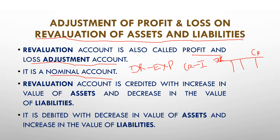On the debit side jitne bhi assets and liabilities se loss hoga, all these losses are shown on the debit side. And jitne bhi benefit honge, income hogi with the revaluation of assets and liabilities, wo sare credit side par show karne honge. Revaluation account is credited with the increase in the value of assets. Credit all the income and gains — agar aapko fayda ho raha hai, to woh credit side par show kiya jayega. Revaluation account ke andar agar asset ki value badh rahi hai — matlab humari sampatti ki value pehle se badh rahi hai — to fayda ho raha hai, isliye woh show kiya jayega credit side par.